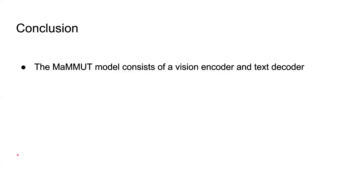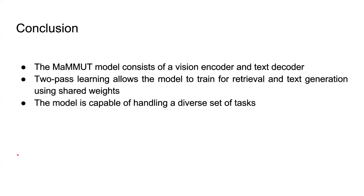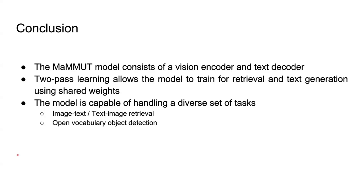In conclusion, MaMMUT consists of a single vision encoder and text decoder. The two-pass learning allows weights to be shared in the decoder for simultaneous handling of both contrastive and generative losses. The model is capable of handling a diverse set of tasks including image-text and text-image retrieval, open vocabulary object detection, VQA, video QA, and video captioning. Thank you.